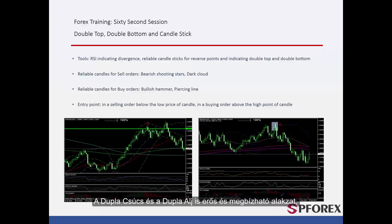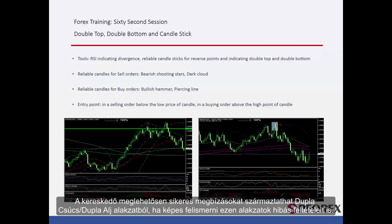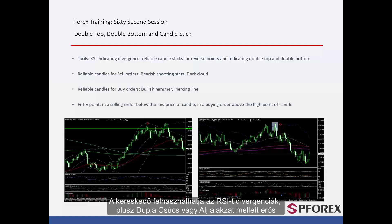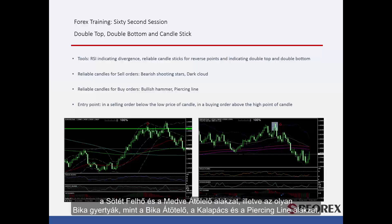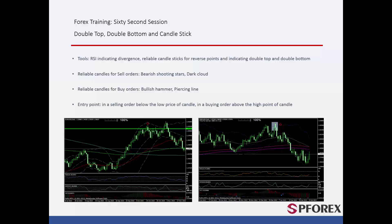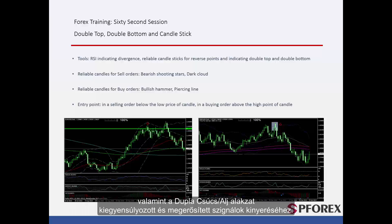Double top and double bottom are powerful and reliable patterns which can be combined with numerous patterns and strategies. A trader can derive considerably successful orders from these patterns if he or she can distinguish failure conditions. A trader can utilise RSI to detect divergence plus powerful and reliable candlesticks alongside double top or bottom patterns to identify reversal points on a market trend. Powerful bearish candlesticks such as shooting stars, dark cloud and bearish engulfing, or bullish candlesticks like bullish engulfing, hammer and piercing line can be exploited alongside double top and bottom patterns to obtain sound and confirmed signals.